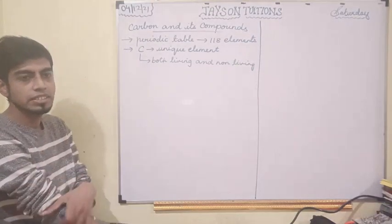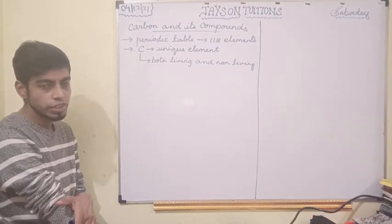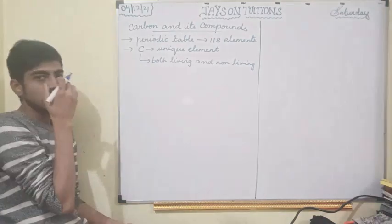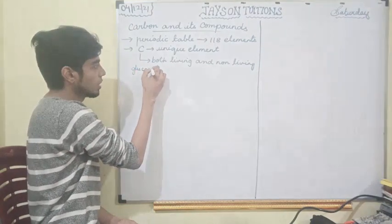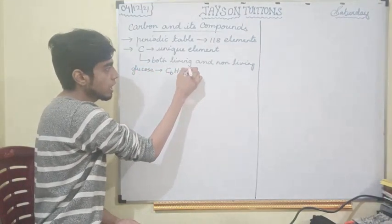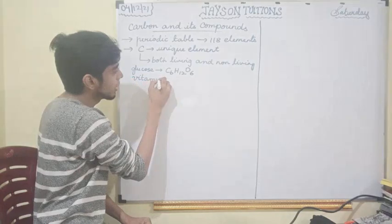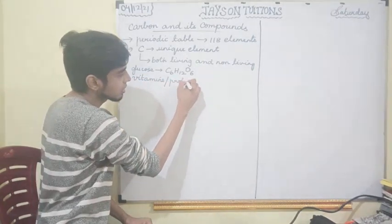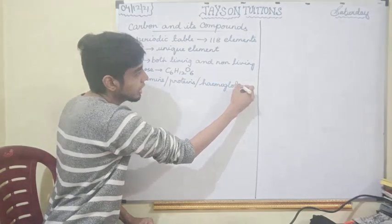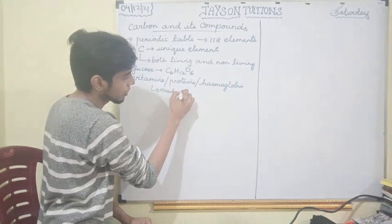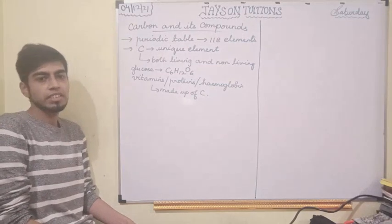For example, in living things — during photosynthesis, glucose is produced. The formula for glucose is C6H12O6. Our vitamins, proteins, and hemoglobin — everything is made up of carbon. So carbon is present mostly in all living things: plants, animals.